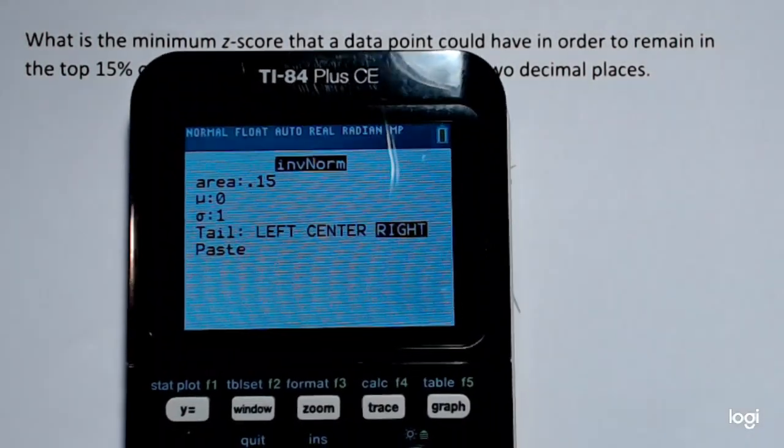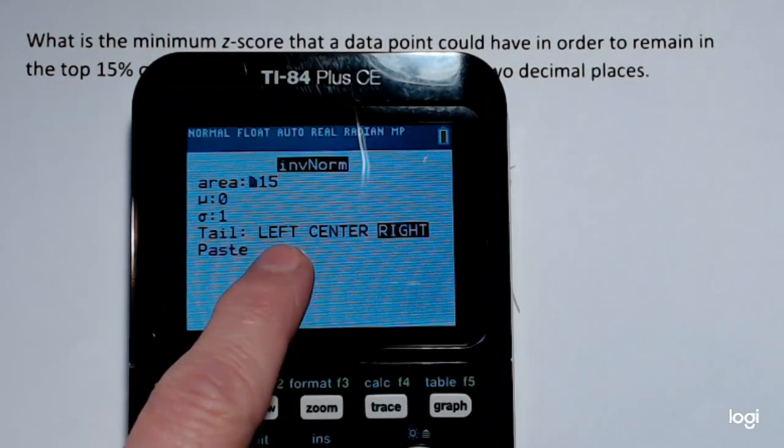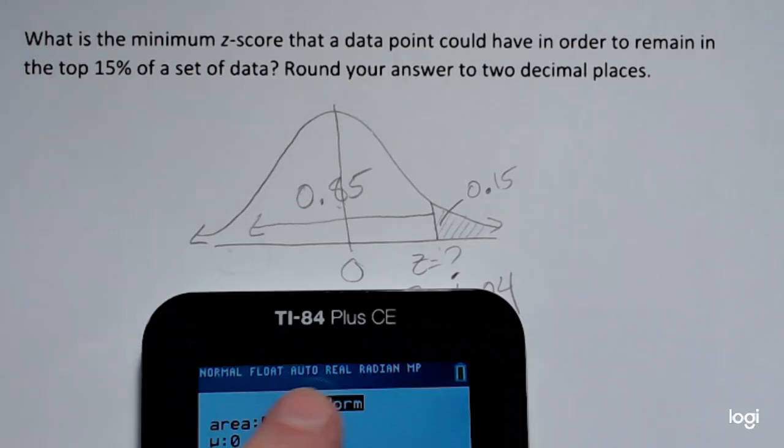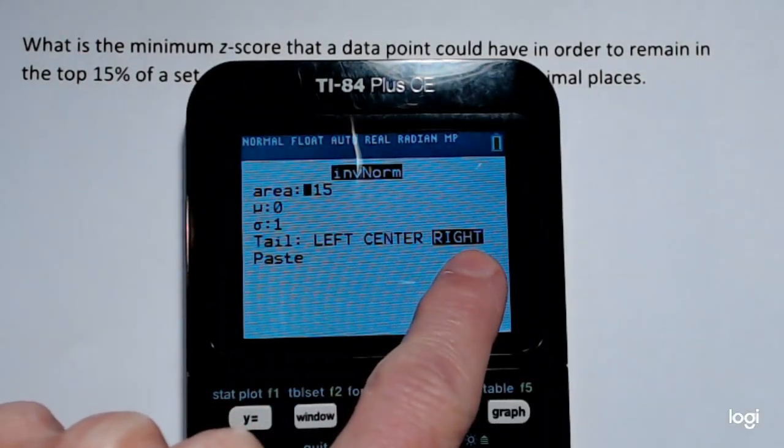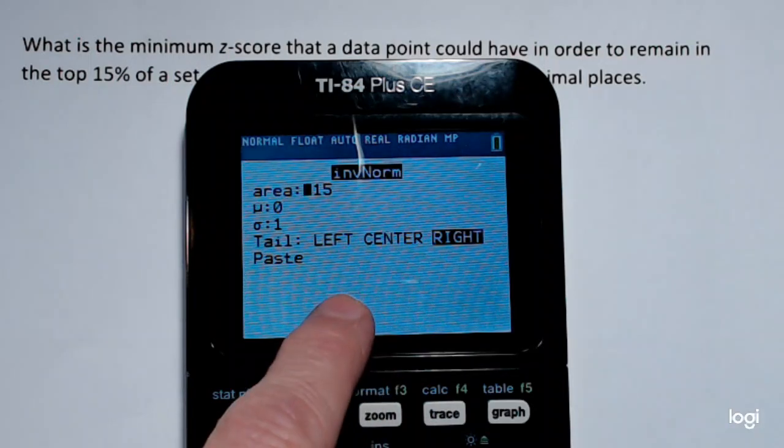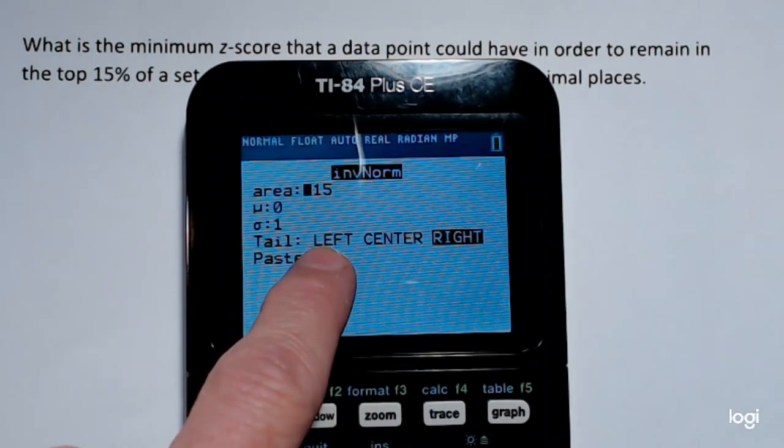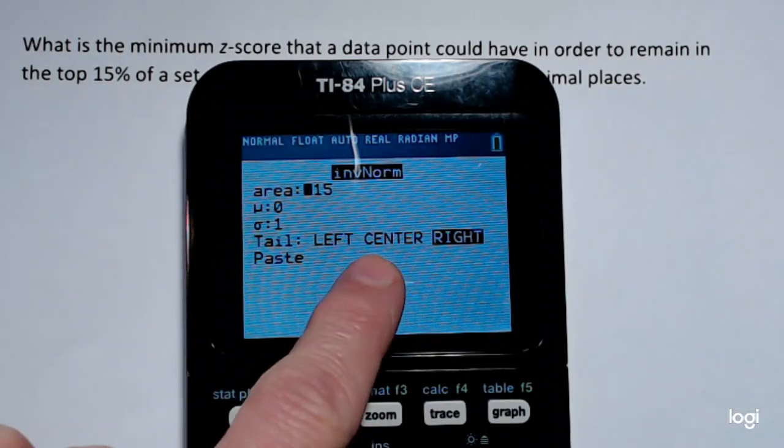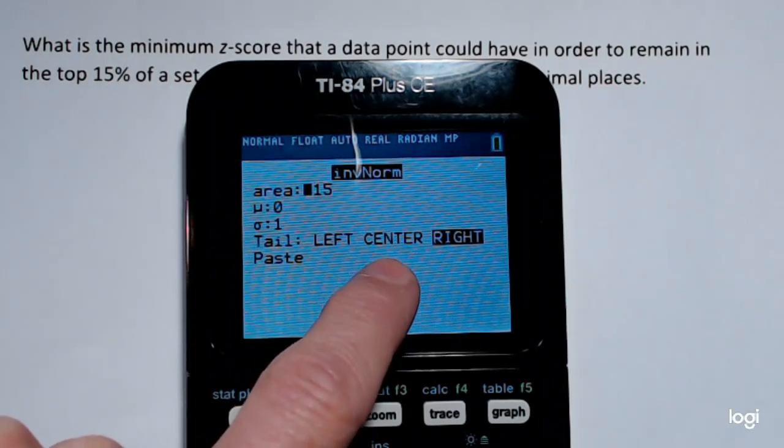The newer calculator lets you pick where the area is placed. So I have an area of 0.15 to the right. I could also have that lower 15% shaded instead or an area between two symmetric z-scores. That would be the center option.